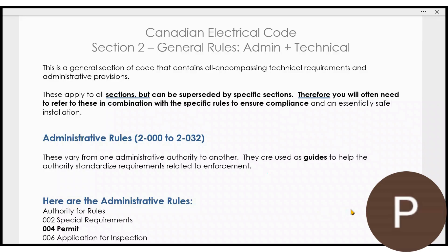You need to know Section 2. You need to know these general rules — the administrative rules and the technical rules — but you also need to know all of the other sections to see if they get superseded by something very specific. That's what the code is about.